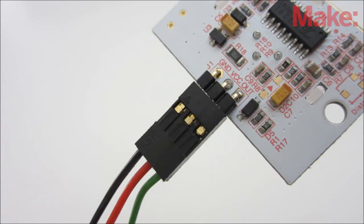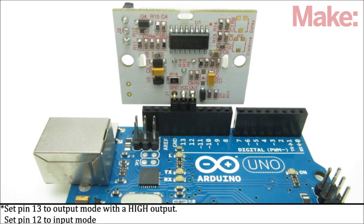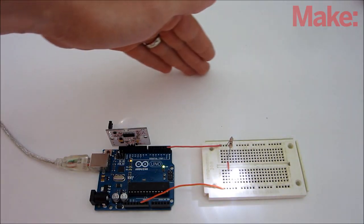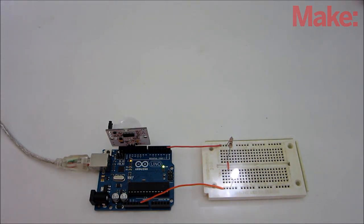You can connect the motion sensor to the board with jumper wires, or you can just plug it directly into the board. Once you've connected the motion sensor module to the microcontroller, you can use it to activate any number of special effects.